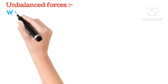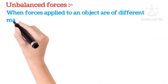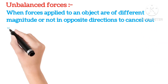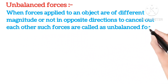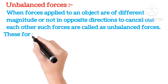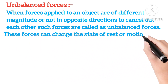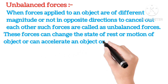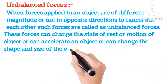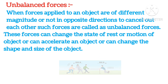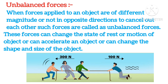Unbalanced forces. When forces applied to an object are of different magnitude and not in opposite directions to cancel out each other, such forces are called unbalanced forces. These forces can change the state of rest or motion of an object and can accelerate an object or change its shape and size. As you can see in the picture, on one side the force is 300 N and on the other side the force is 100 N. So the net force is 300 − 100 = 200 N, and the side with 300 N can pull the rope in their direction. This is an unbalanced force.